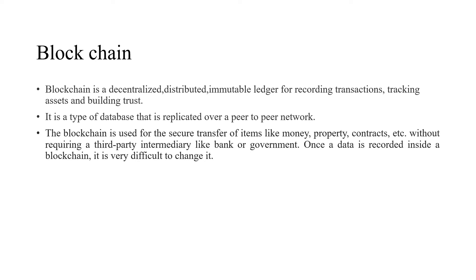Here we discuss how blockchain is different from the traditional one. Traditional data storage and security systems are highly centralized, which means they have a single point of failure. Blockchain-powered storage is highly resilient to hacking because blockchain is decentralized — it doesn't have a centralized server. It is distributed, it is a peer-to-peer network, and the blocks in the blockchain are distributed among the peers.